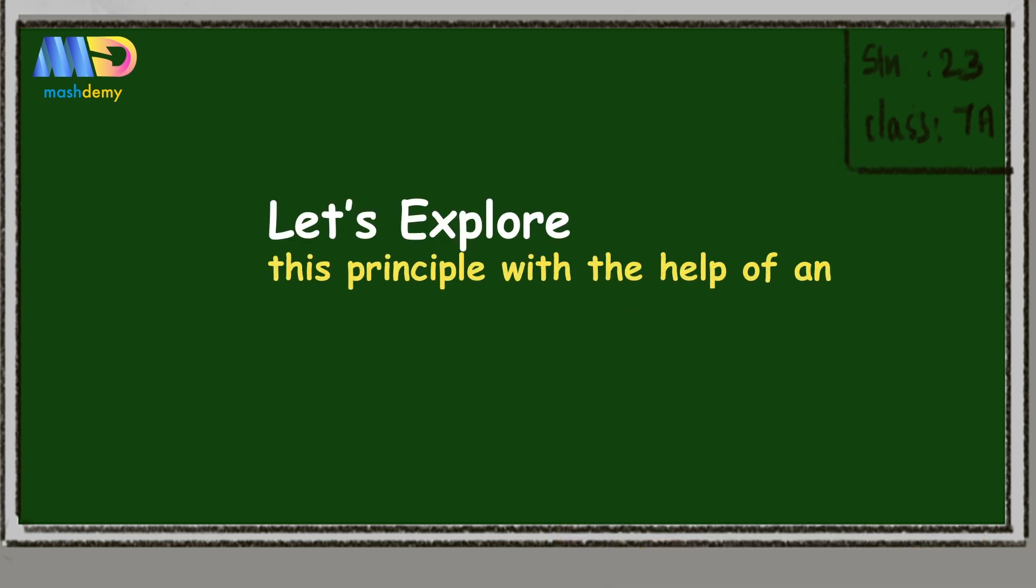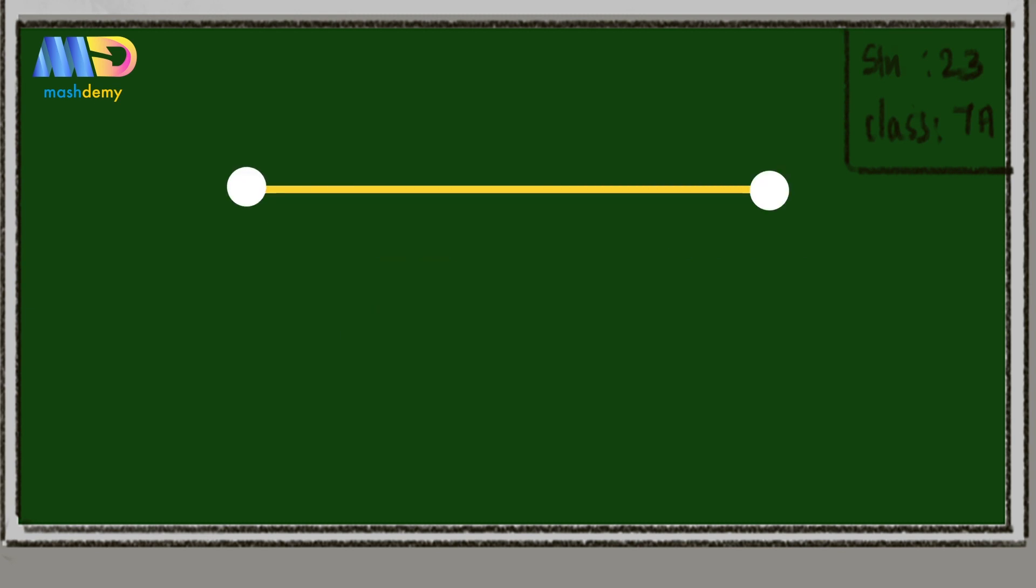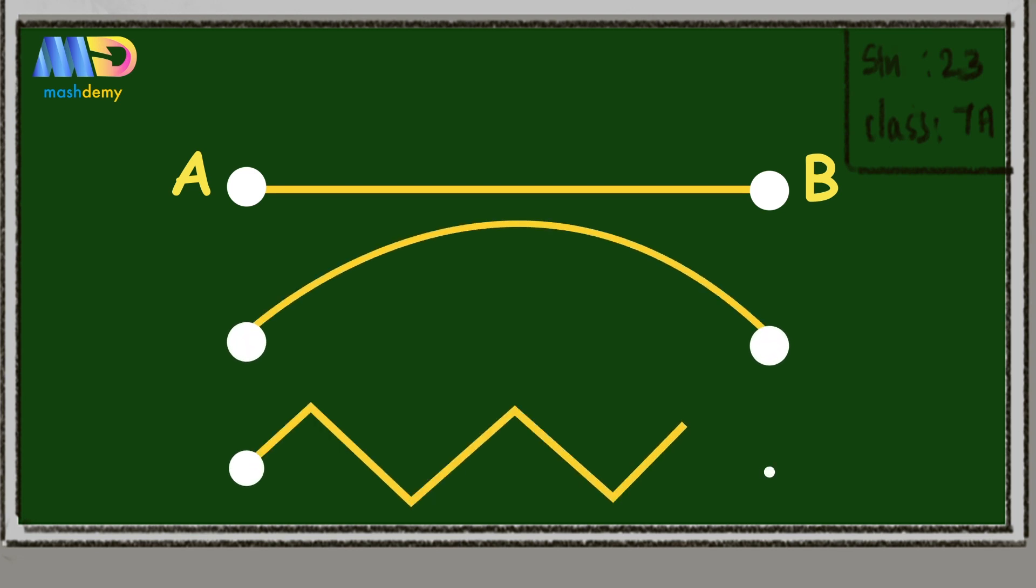Let's explore this principle with an example. Suppose light wants to travel from point A to B. Light can choose multiple paths—it can go straight, take a curved path, or go zigzag.